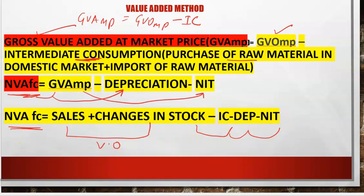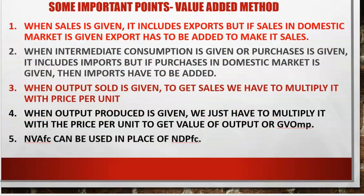Some important tips for numericals: Point one — when Sales is given, it includes exports. But if Sales in the domestic market is given, you need to add exports separately to get total Sales. If exports and domestic market sales are both given separately, add them. Point two — when Intermediate Consumption or Purchases is given, it includes imports also. But if Purchase in the domestic market is given, then imports have to be added separately to get total Intermediate Consumption.